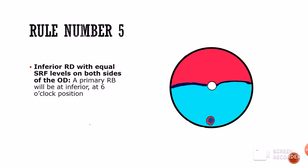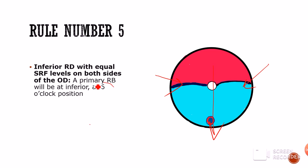Rule number five: if you have a shallow inferior RD that is symmetrical on both sides — meaning the level on the nasal side equals the level on the temporal side — then the break is present right at the center, at the 6 o'clock position.